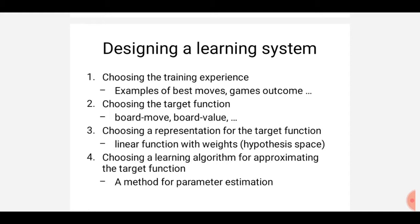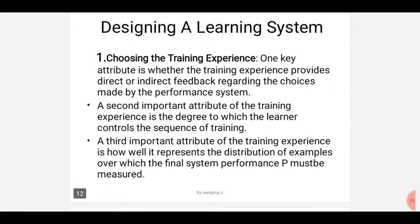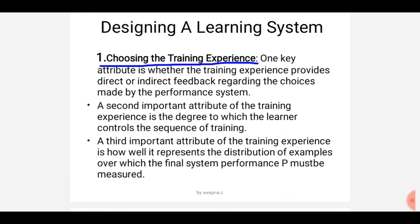To learn in detail, first we are going to the first step — choosing the training experience. In designing a learning system, the first step is choosing the training experience. To choose a particular training experience, we need to consider three attributes. The first attribute is whether the training experience provides direct or indirect feedback regarding the choices made by the performance system.